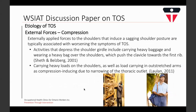Another risk factor is externally applied compression. Forces applied to the shoulders that induce a sagging shoulder posture are associated with worsening of symptoms. Any activity that depresses the shoulder girdle, including carrying a heavy bag on one shoulder or carrying lumber, as well as holding a load in outstretched arms, acts to narrow the space within the thoracic outlet.